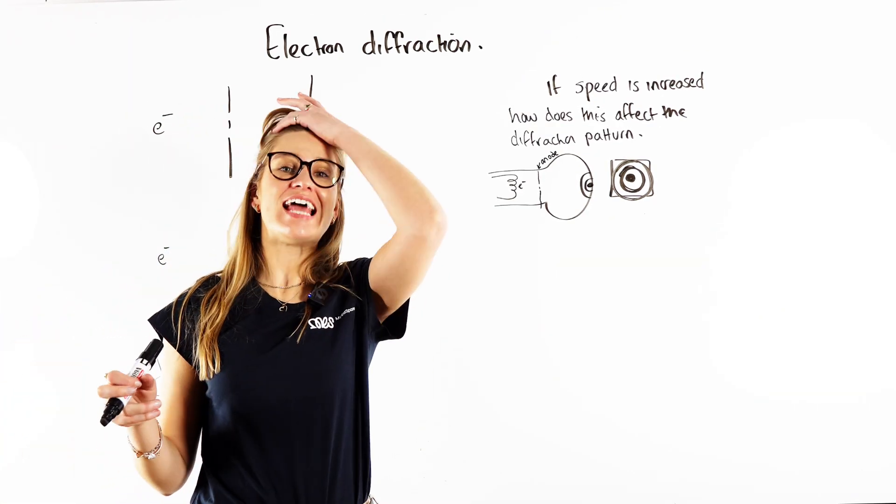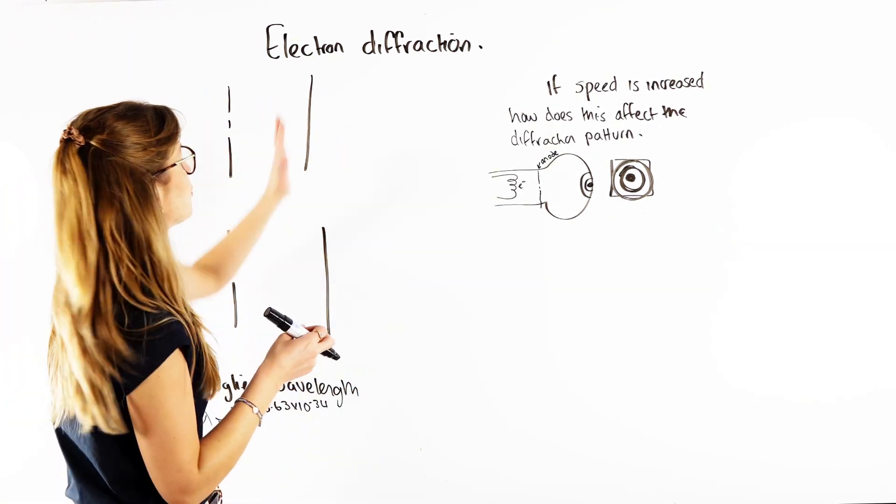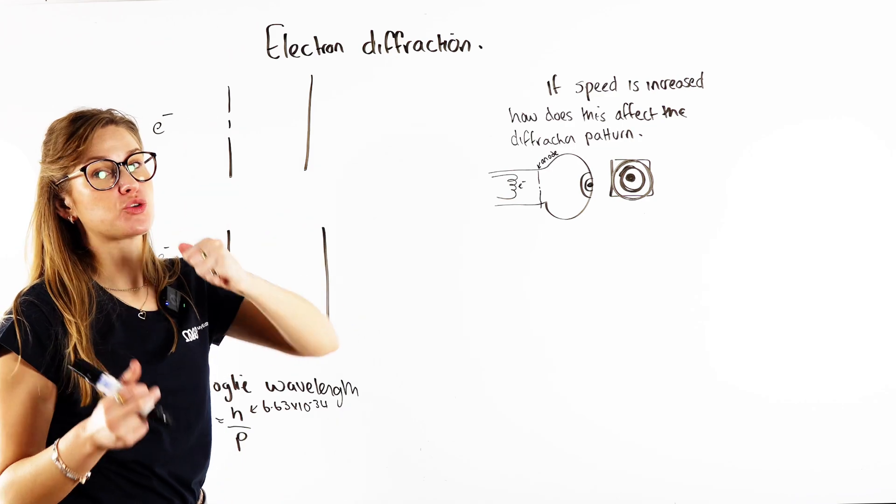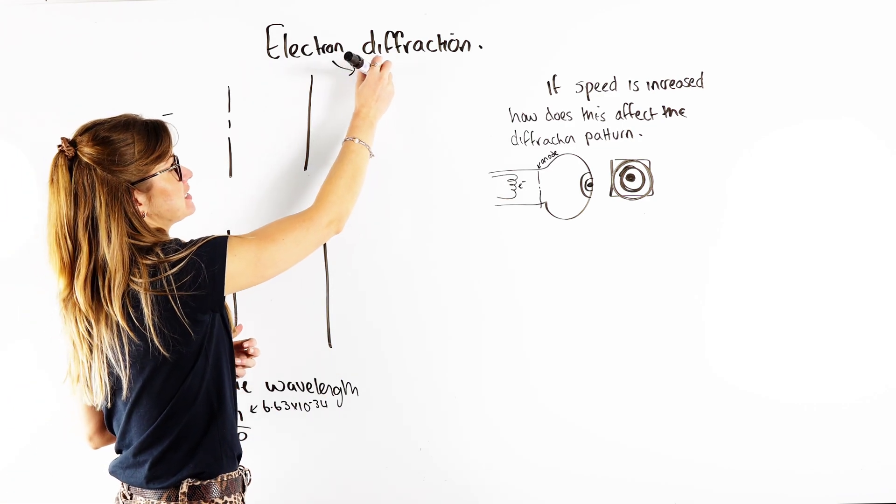Hey guys, so in this video we're going to go over electron diffraction. So electrons, we know they're particles. We know they're particles because we know they can ionize things, right?